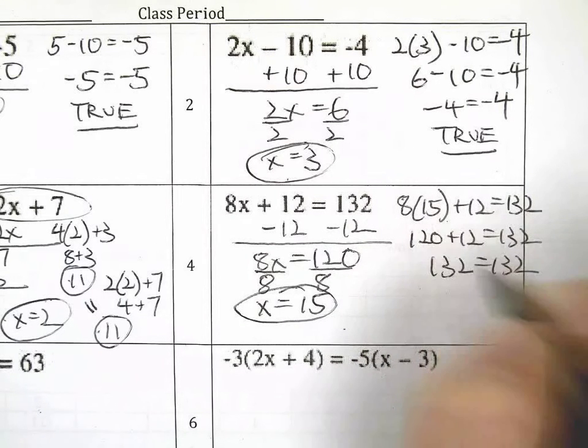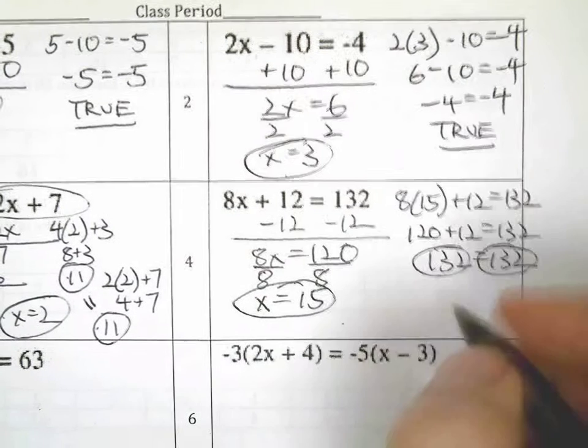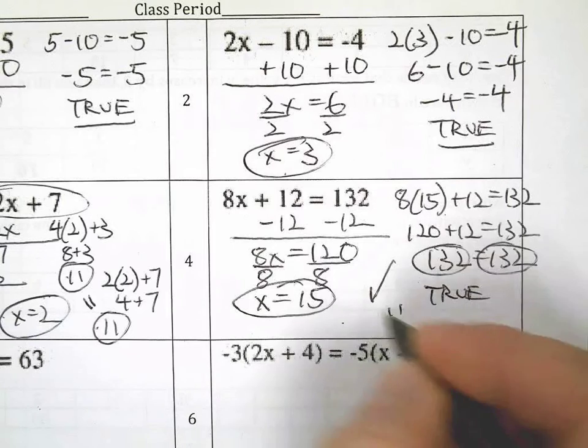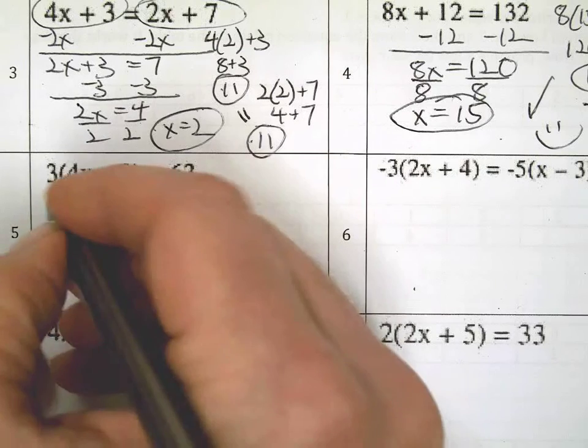120 plus 12 is 132. Take it all the way down until you just have simplified it, so there is only one number on each side. Make it so obvious. Put a true or a check mark or a smiley face or something to indicate your success.